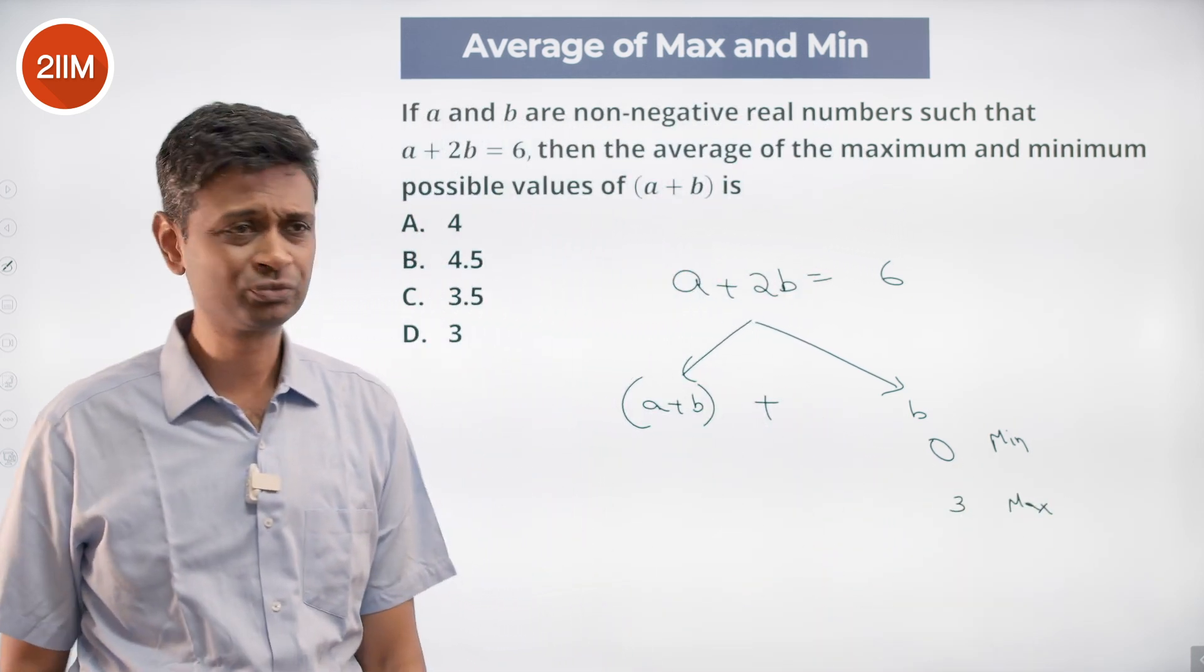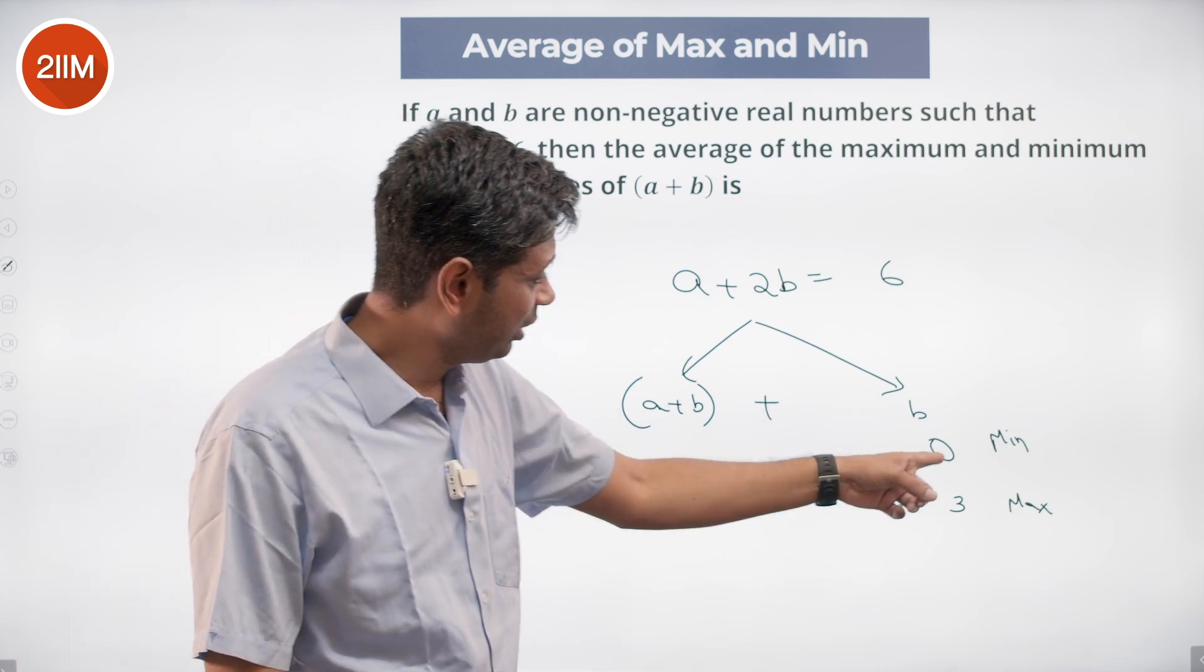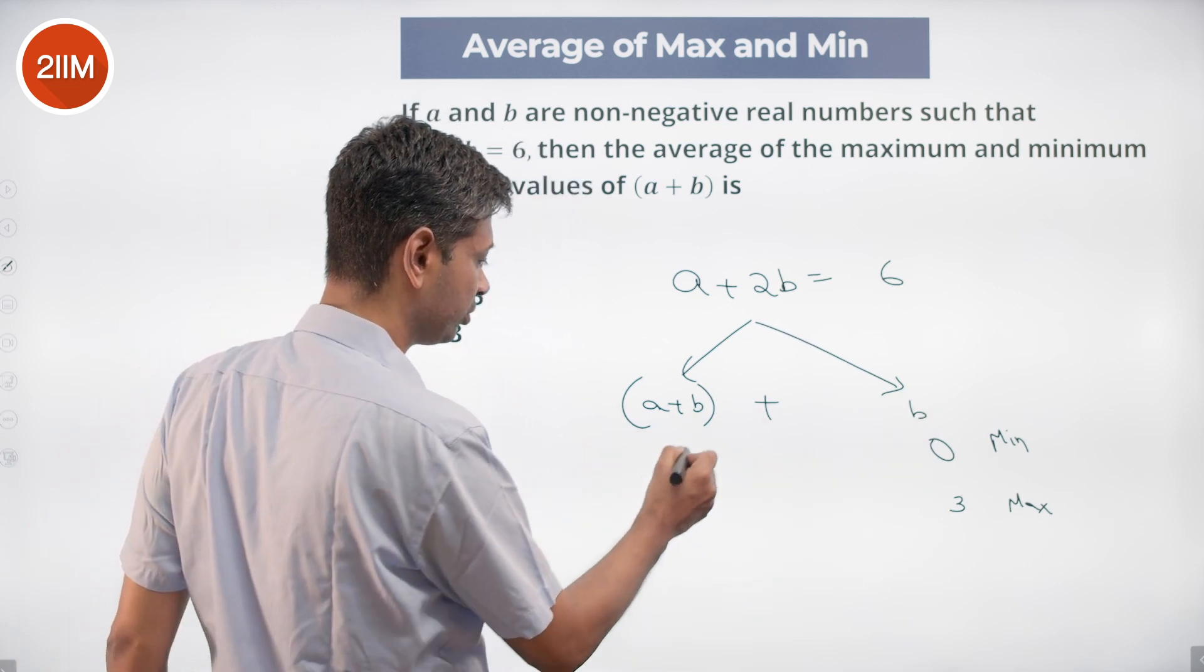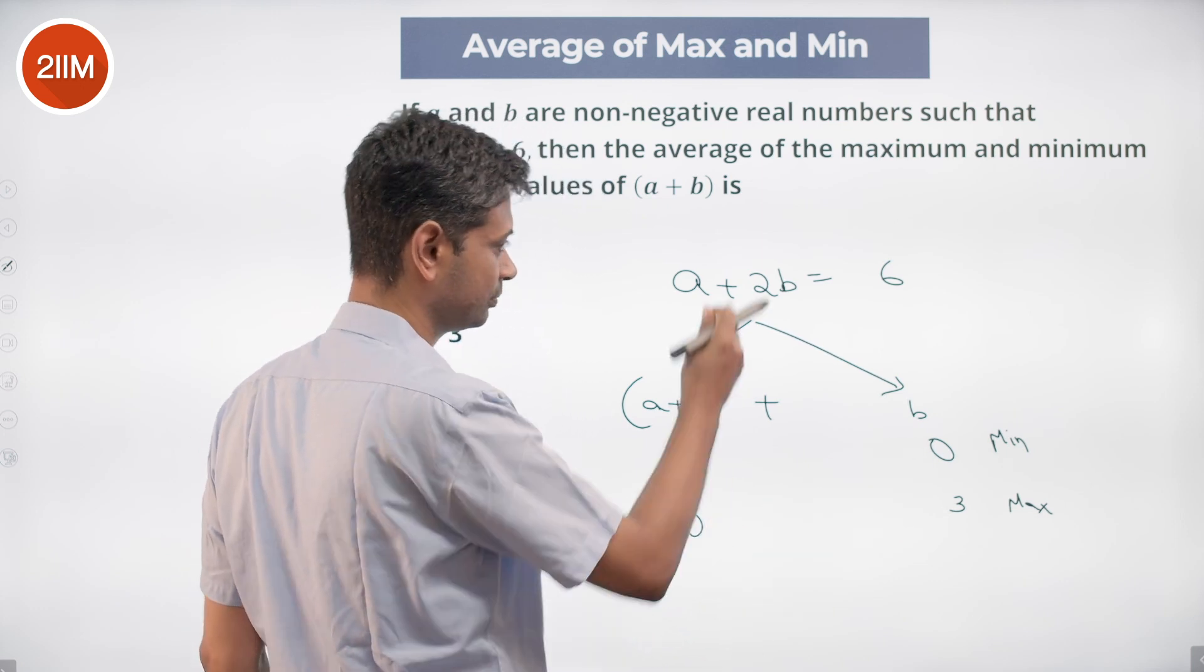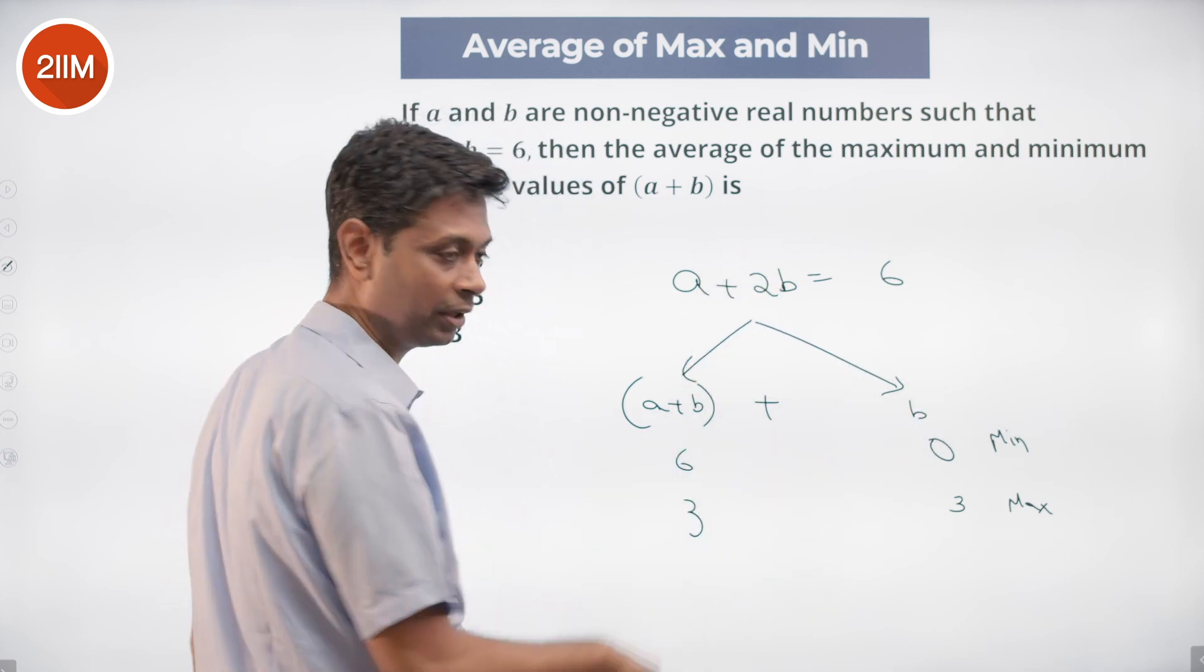And we're through. If b is 0, then a plus b is 6. If b is 3, a plus b is 3. 6 minus 0 is 6. 6 minus 3 is 3.